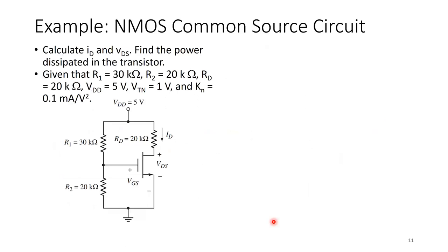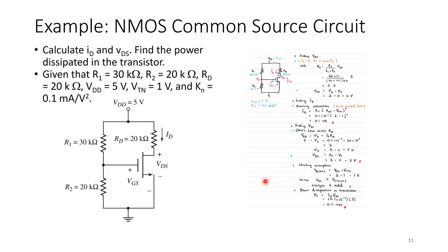Let's calculate ID, VDS, and the power dissipated in the transistor. Given R1 = 30 kΩ, R2 = 20 kΩ, RD = 20 kΩ, VDD = 5 V, threshold voltage VTN = 1 V, and transconductance parameter KN = 0.1 mA/V². VTN and KN are values obtained from the transconductance parameter from the combination of process fabrication and transistor sizing. I'll show this step by step as it would appear in a pen-and-paper exam.